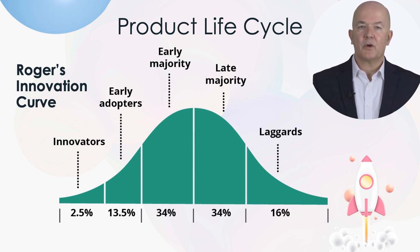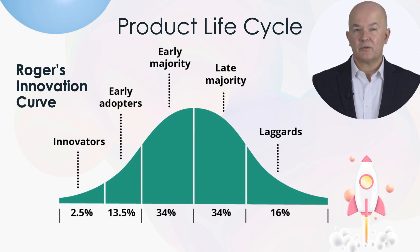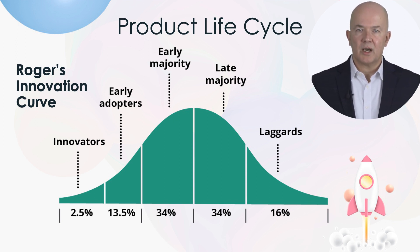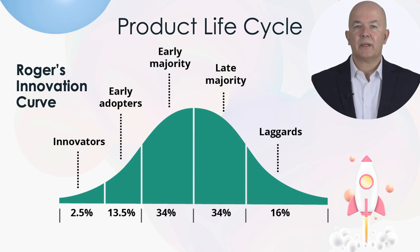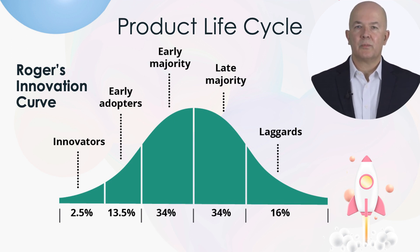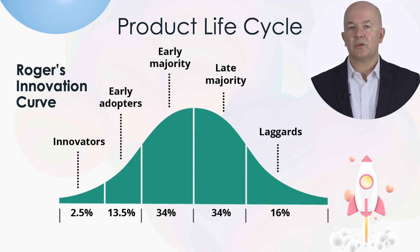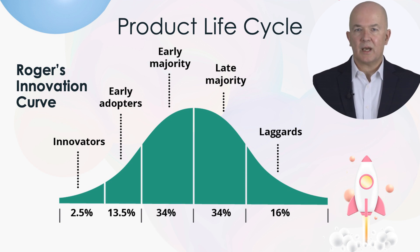The early majority are the large group of customers who buy products after a few customers have tried and given positive feedback. The late majority are a large conservative group in a community who are slow to adapt to technology and will want a tried and tested solution. They by nature are less likely to take risks.